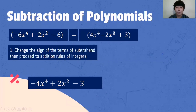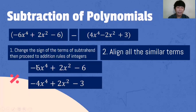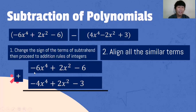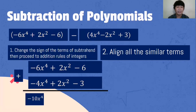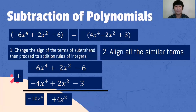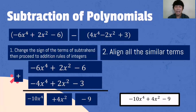From positive 4x⁴, it becomes negative 4x⁴. From negative 2x squared, it becomes positive 2x squared. From positive 3, it will become negative 3. Then we align all the similar terms: x raised to 4, x squared, constant. Proceed to addition: negative 6x⁴ plus negative 4x⁴ — same sign, so we add: negative 10x raised to 4. Then 2x squared plus 2x squared: 4x squared. Negative 6 plus negative 3 — same sign: negative 9. Final answer: negative 10x raised to 4 plus 4x squared minus 9.